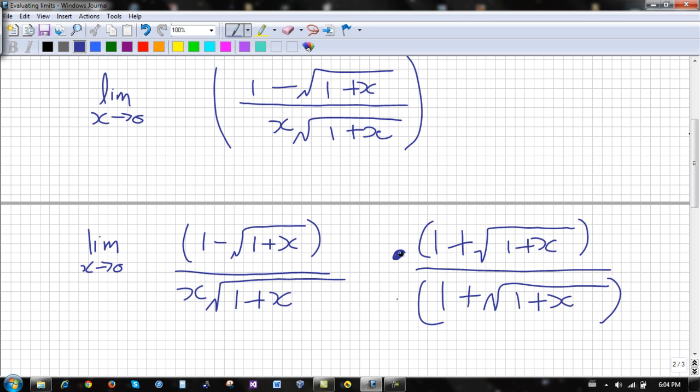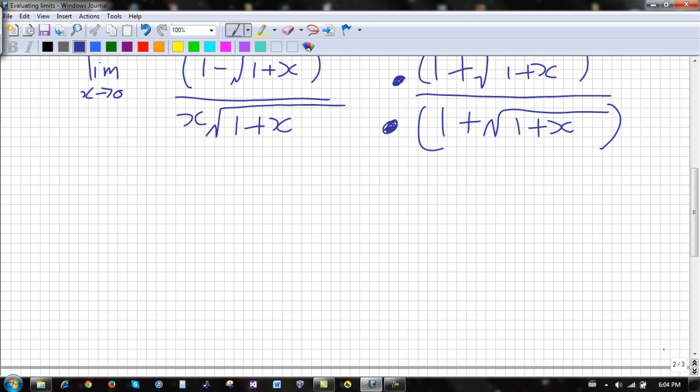And we multiply the numerator and denominator. After this, we would get limit as x approaches zero. So when you multiply them together, you would get 1 squared minus 1 plus x in brackets, because a radical times a radical with the same value inside the radical would equal to itself.